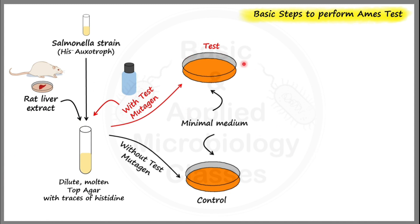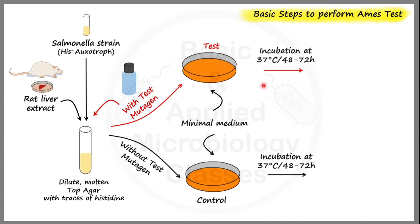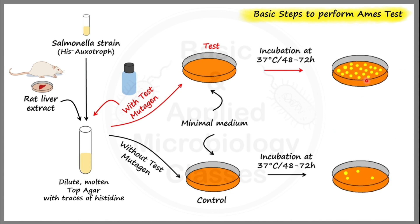After setting up the test and control reactions, we proceed to the incubation step. Incubation is done at 37°C for 48 to 72 hours. After incubation, the next step is observation. In the observation part, we look for mutational revertants — whether colonies are appearing or not. Appearing colonies represent histidine prototrophs.